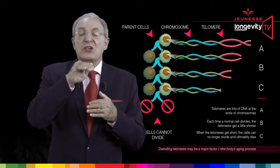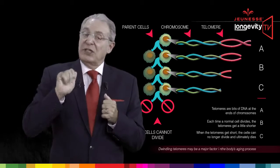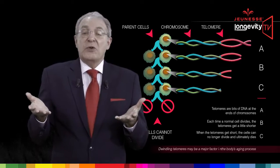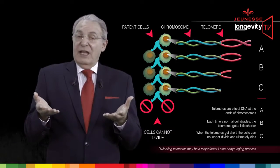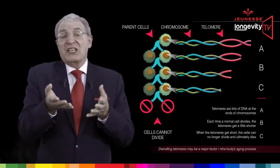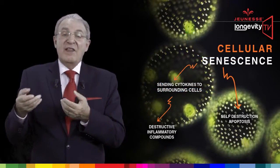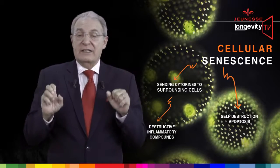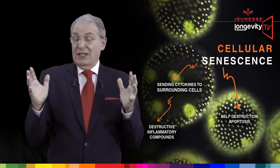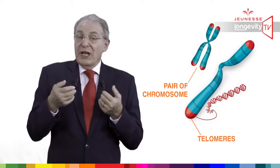Meanwhile, after 50 to 70 divisions, the cells in our body reach a stage where there is no more telomeres to protect our DNA, so these cells can no longer reproduce themselves. They reach what we call a retirement-like state in which they die or no longer divide. This endpoint is called senescence, and when senescence reaches a majority of cells, we die of old age.